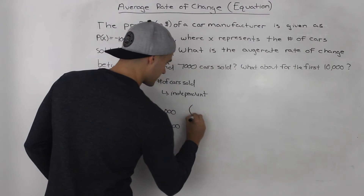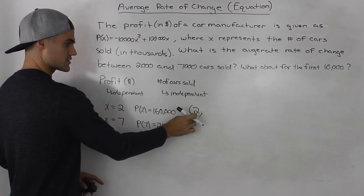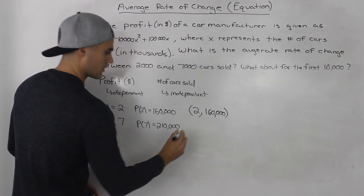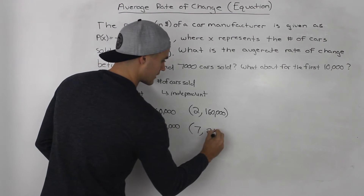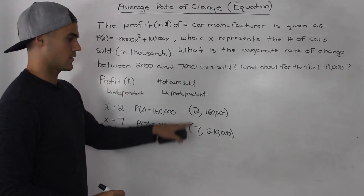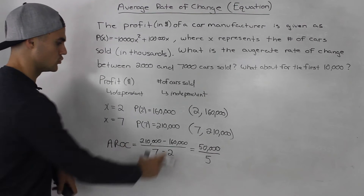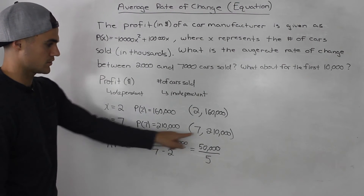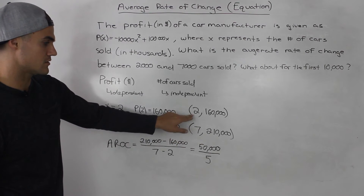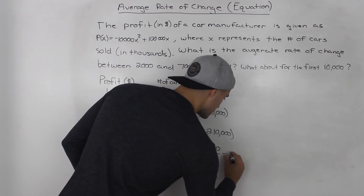It's useful to put these in coordinate form: (2, 160,000) and (7, 210,000). Using the average rate of change formula, the numerator is the change in the dependent variable — 210,000 minus 160,000 — and the denominator is the change in the independent variable — 7 minus 2. This simplifies to 50,000 over 5, which equals 10,000.